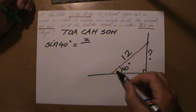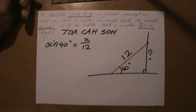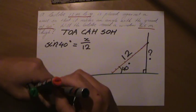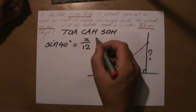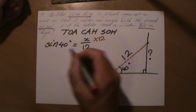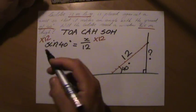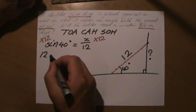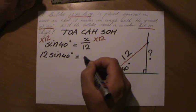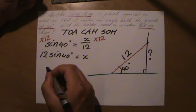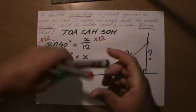Sine of 40 degrees equals the opposite divided by hypotenuse. That's my question mark, so we put a little x there over the hypotenuse, and that's 12. Okay, rearrange the formula. We don't like fractions, multiply both sides by the denominator to get rid of that fraction. Multiply by 12, so we get 12 times the sine of 40 degrees which equals x. So x equals...